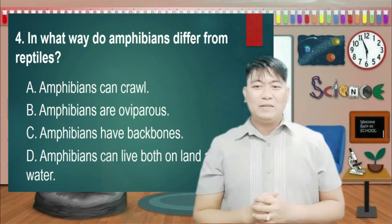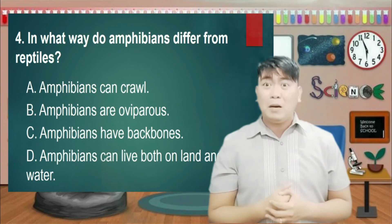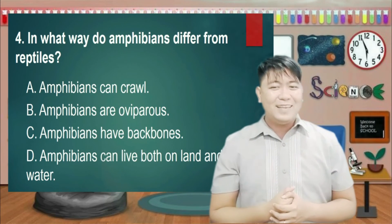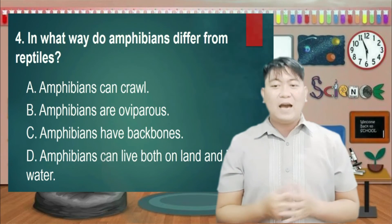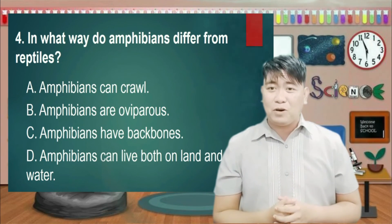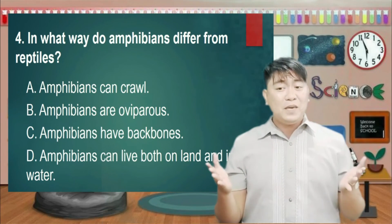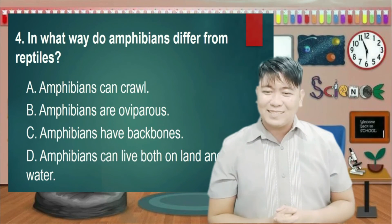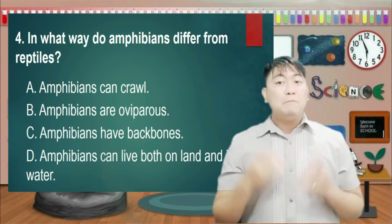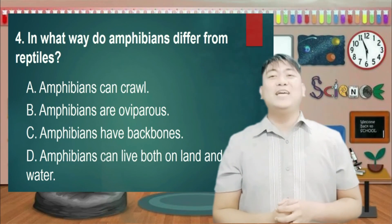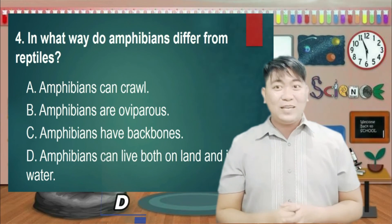Number 4: In what way do amphibians differ from reptiles? A. Amphibians can crawl. B. Amphibians are oviparous. C. Amphibians have backbones. D. Amphibians can live both on land and in water. And the answer is... Letter D.